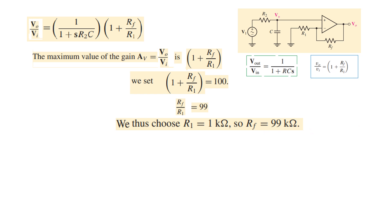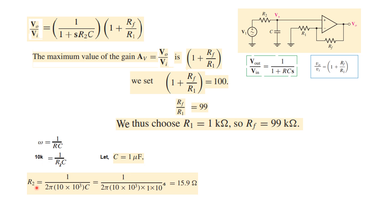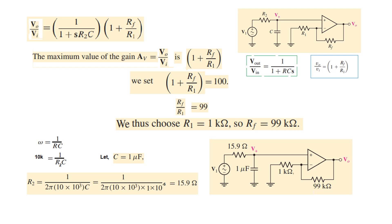Now we calculate the corner frequency. The formula for corner frequency is omega equals 1 over R2C. The required corner frequency is 10 kHz, so we plug that in. Assuming a capacitor value of 1 microfarad, we can solve for R2, which comes out to be 15.9 ohms. So now we have all the parameters: R2 equals 15.9 ohms, C equals 1 microfarad, R1 equals 1 kilohm, and RF equals 99 kilohms.